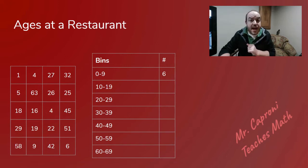Now our next step is to go ahead and find out how many people fell in each one of these bins. So starting off zero to nine, you can see we have the one, the four, the five, another four, a nine and a six, which gives us a total of six people that fell into that bin.